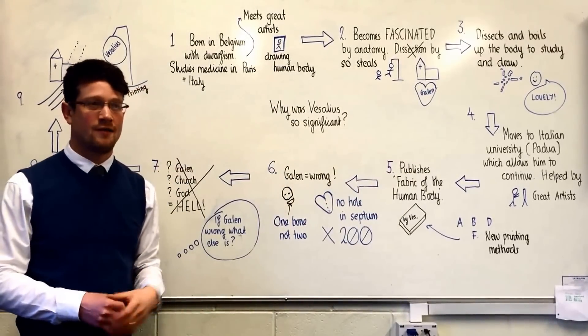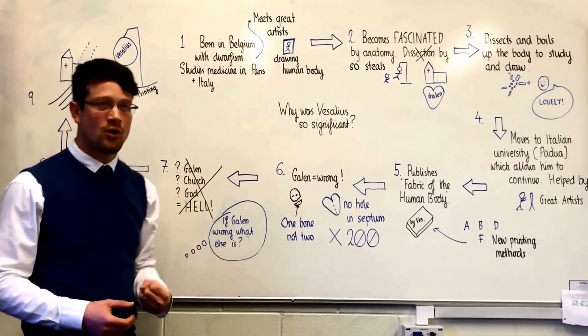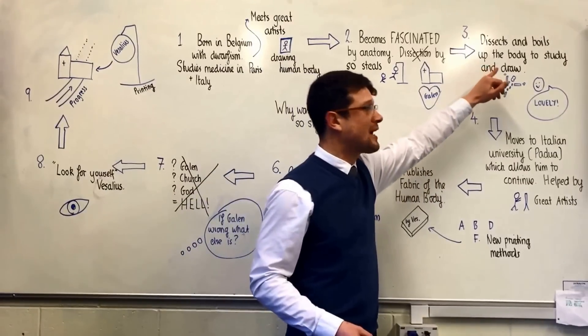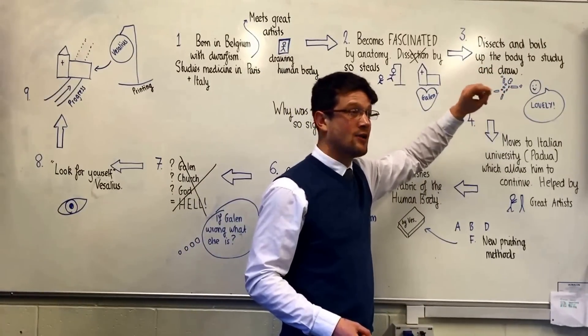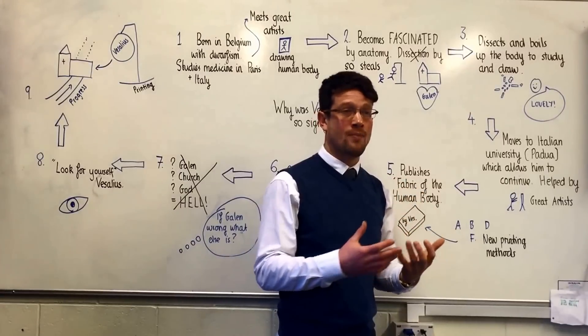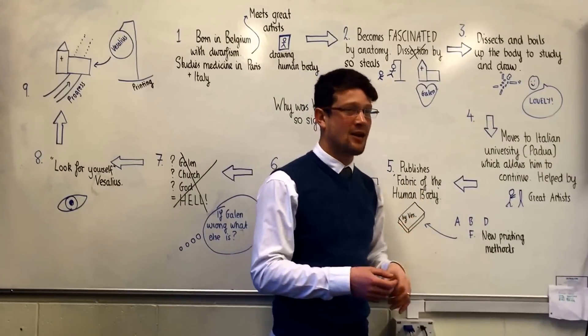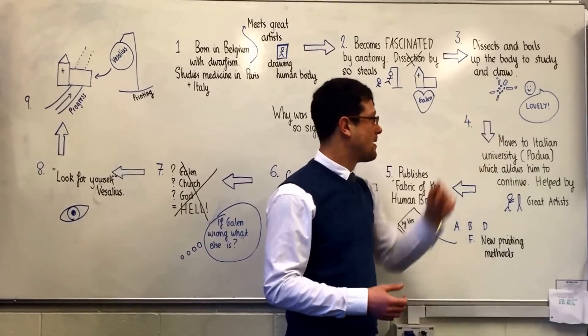What he did was went out in the middle of the night, found a criminal hanging on a gallows, jumped up, pulled the criminal down and took that criminal back to his house where he dissected him and boiled up the body in order to write down and draw first of all the muscles, the nerves, the heart, everything else and secondly the bones. He loved this and was fascinated by what he found.